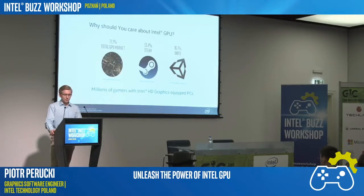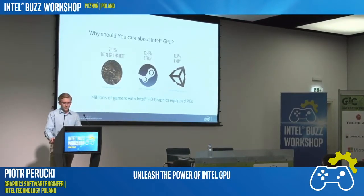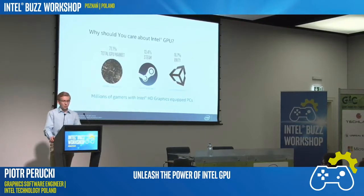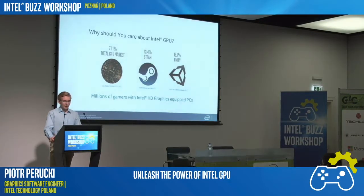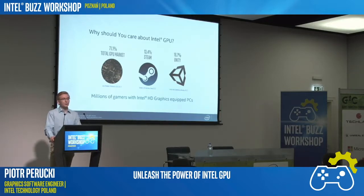So why should we care about Intel GPU? According to statistics, Intel is one of the top players on the GPU market. According to Jon Peddie research, Intel takes about 71% of GPU market. The reason for that is 99% of Intel's CPUs have graphics integrated. And according to Steam surveys and Unity statistics, from 13% to 17% of players actually use Intel GPU. If we assume that there are 125 million players on Steam, then that's about 17 million players using Intel GPU.